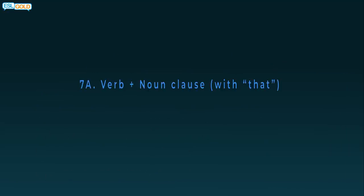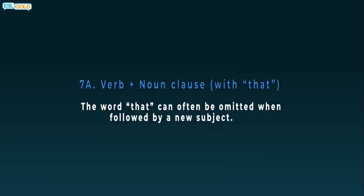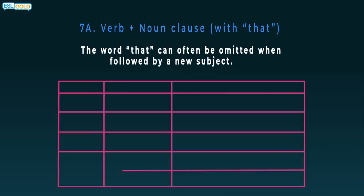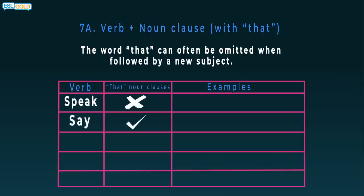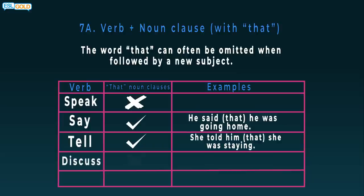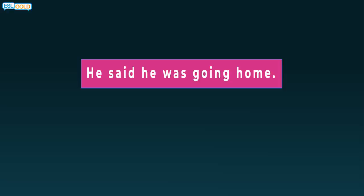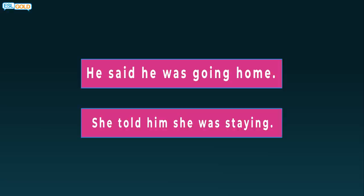7a. Verb plus noun clause with that. The word that can often be omitted when followed by a new subject. Speak: no. Say: yes. He said that he was going home. Tell: yes. She told him that she was staying. Discuss: no. Talk: no. He said he was going home. She told him she was staying. Notice how we omit the word that here.